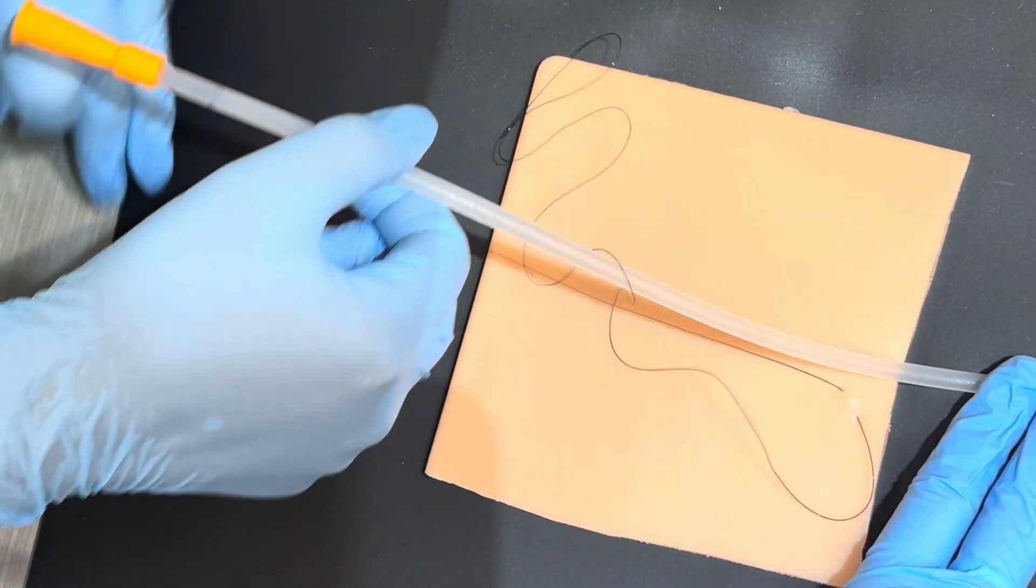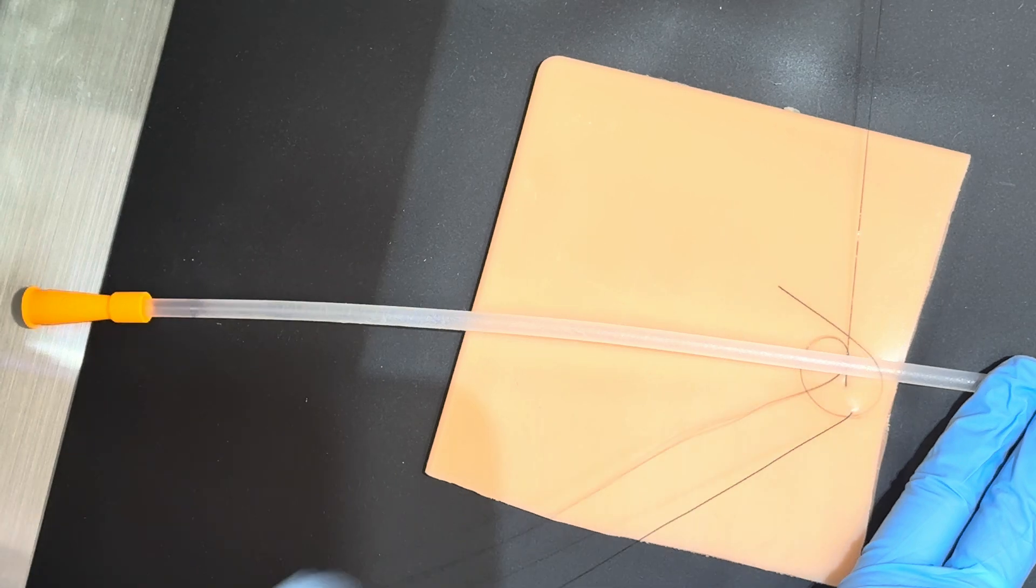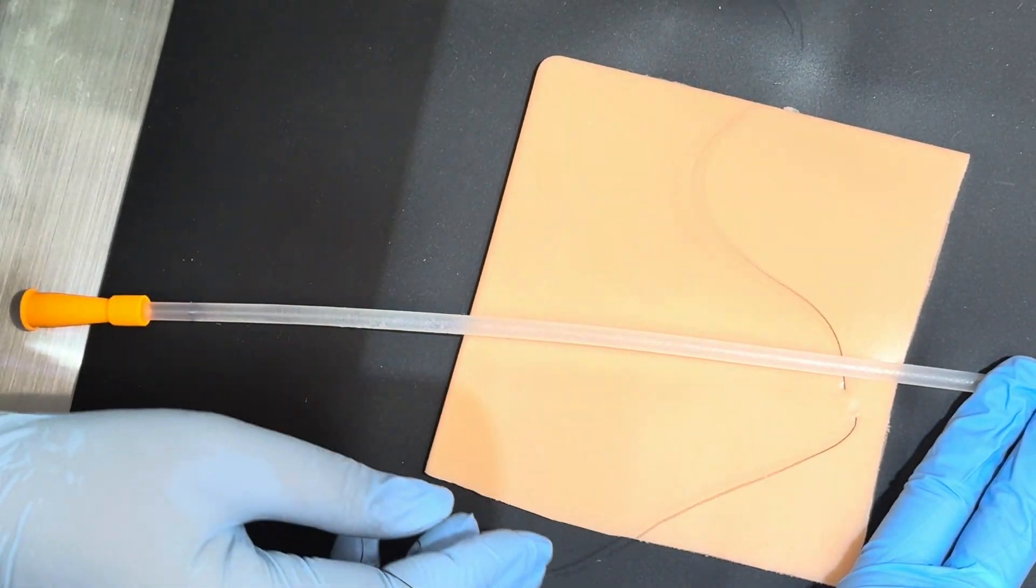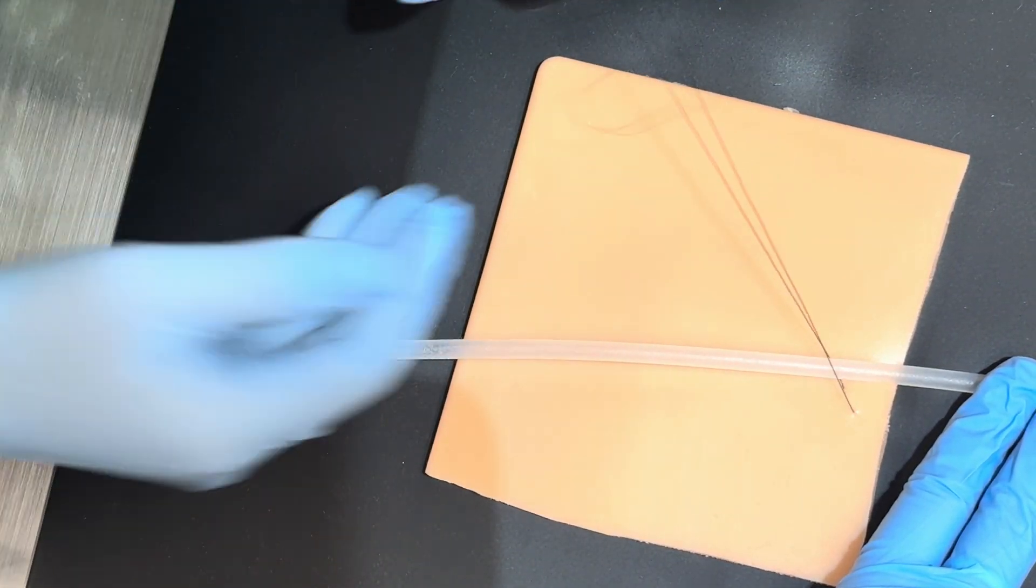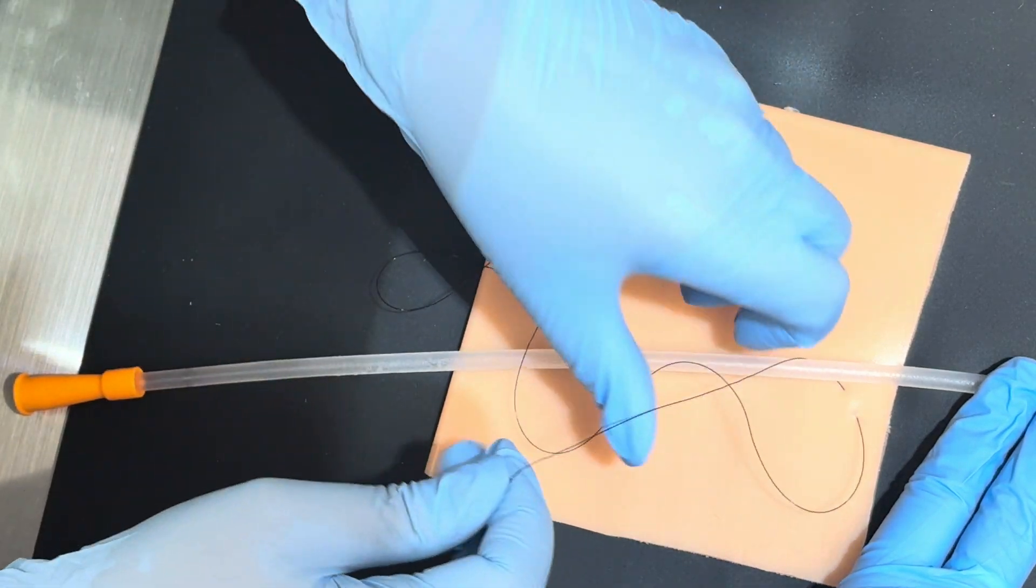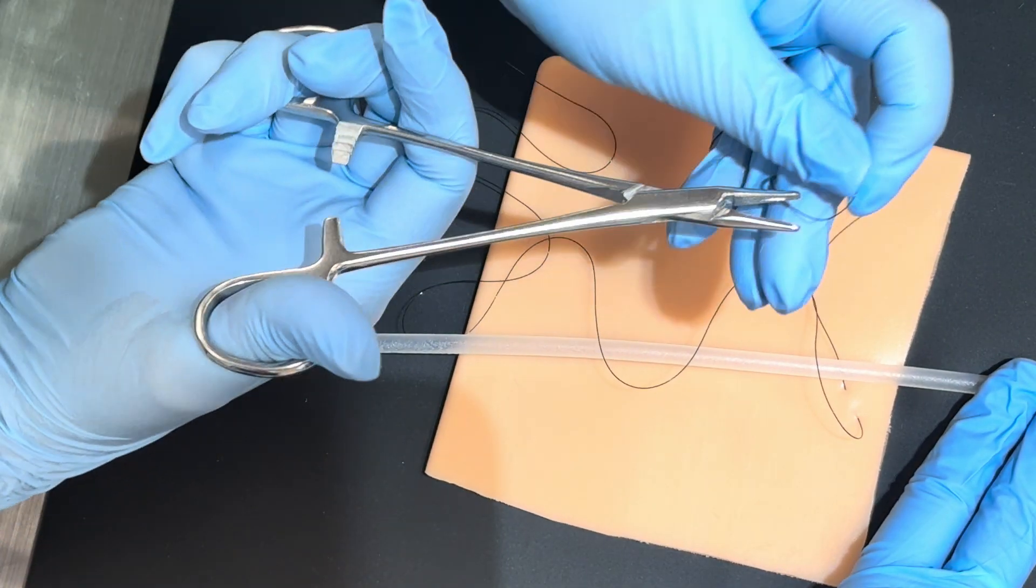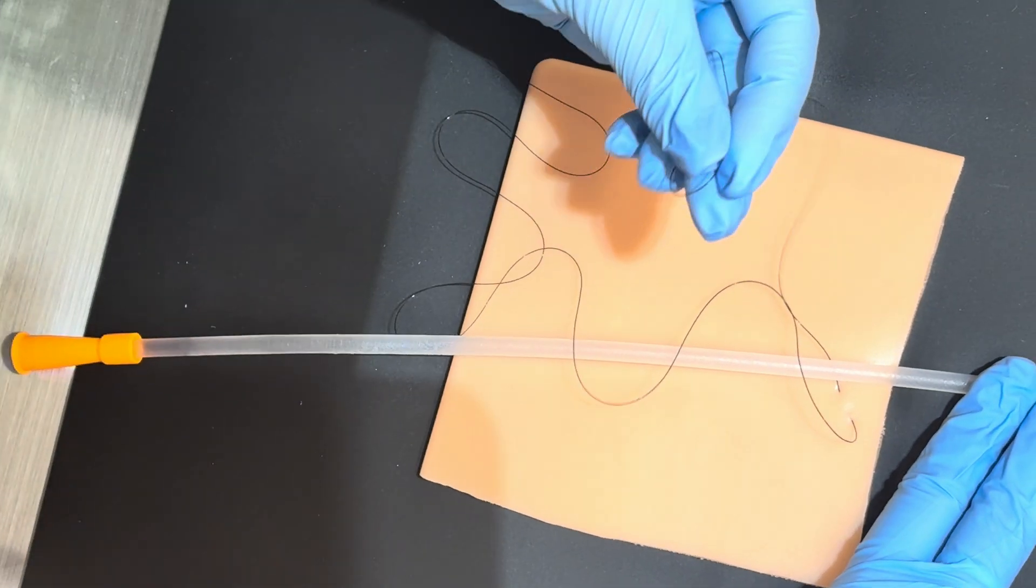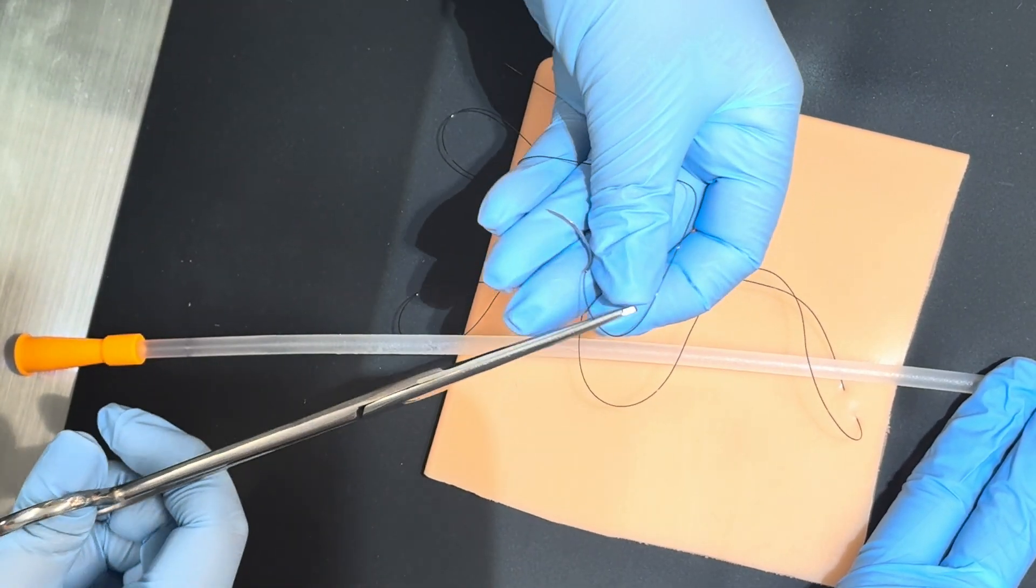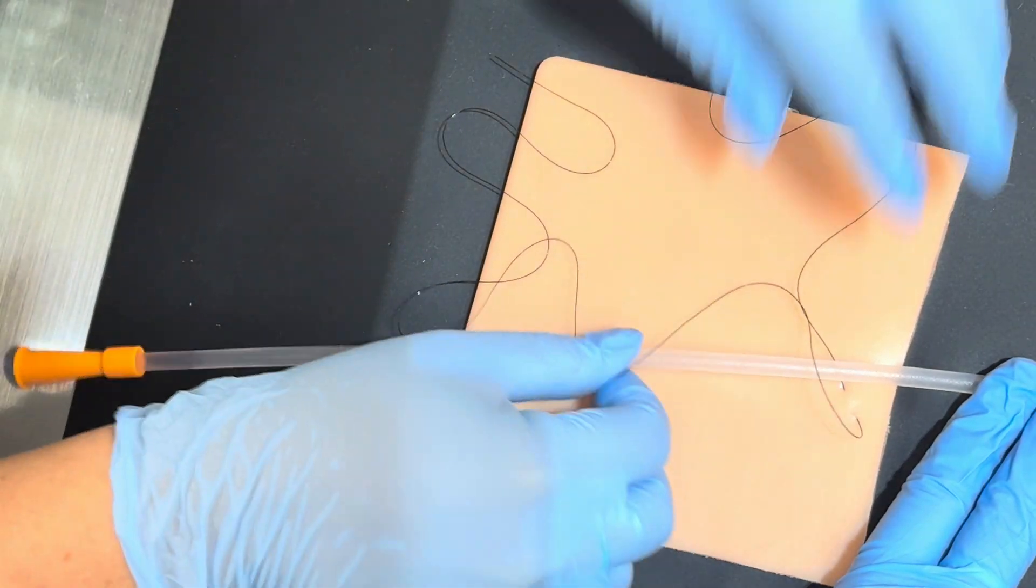I'm going to go ahead now. I've got my stay suture that's grasping the patient. I'm going to do a square knot using a hand tie. Actually, I'm going to go ahead and take off this needle because it's going to get in my way a little bit. I don't want to accidentally cut myself with that.